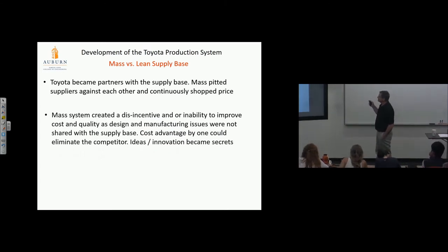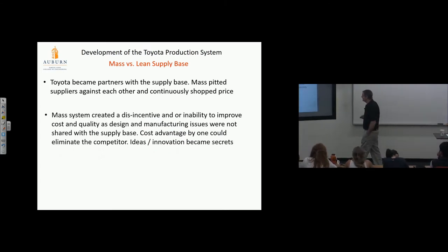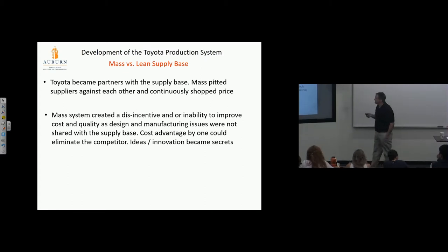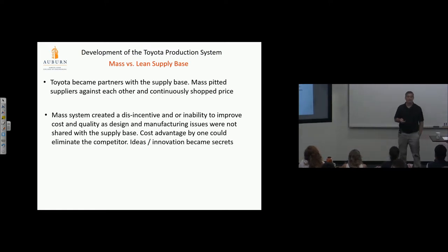Mass system created a disincentive or inability to improve cost and quality. Design and manufacturing issues were not shared with the supply base. Cost advantage by one could eliminate the competitor. Ideas and innovations were secrets because they're all looking out for themselves, trying to put each other out of business. The suppliers are trying to survive, and if they didn't, they wouldn't survive because low cost would win.